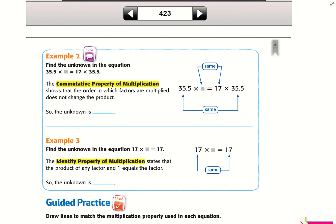In this case, we're using the Commutative Property. The Commutative Property of Multiplication shows that the order in which factors are multiplied does not change the product. So in this case, our unknown number is going to be 17, because all we did was switch which one was first and which one was last.